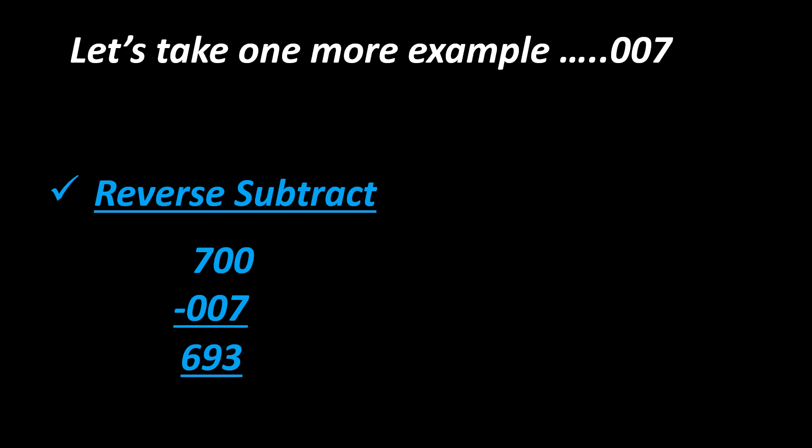Let's take another example. Let's take example of single digit, but as per rule you need to write 007. It should be in three digits, right? Reverse subtract smaller number from bigger number. So here we will do 700 minus 007, and we will get 693.